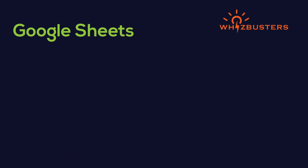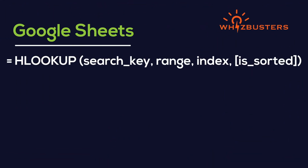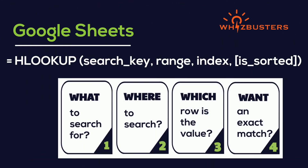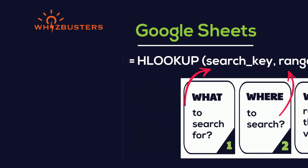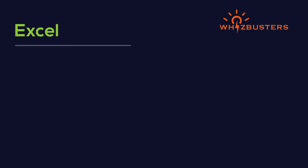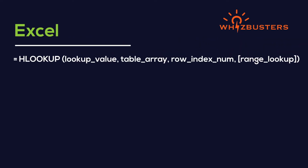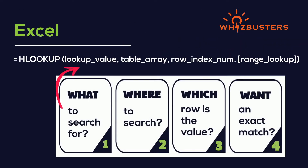In Google Sheets you will see: equal HLookup, search key, range, index, is sorted. While in Excel you'll see: equal HLookup, lookup value, table array, row index num, range lookup. So let's take a look at an example.